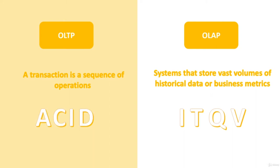OLTP are read-intensive systems designed to handle thousands of concurrent transactions per second. Analytical workloads, or OLAP, are typically read-only systems that store vast volumes of historical data or business metrics to obtain insights and help business decision making.